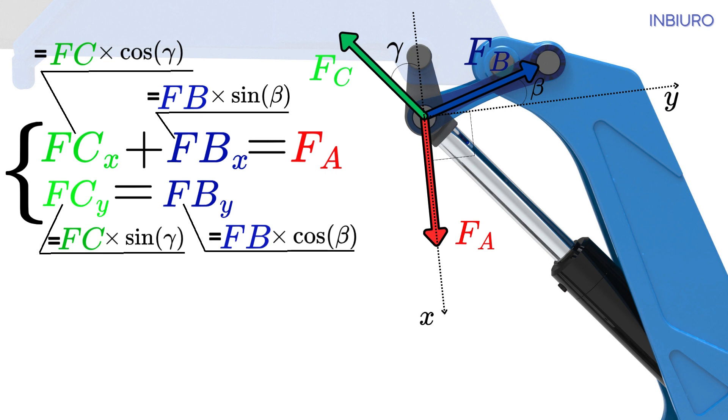You have new equations now. F C times cosine of gamma plus F B times sine of beta equals F A. And F C times sine of gamma equals F B times cosine of beta.